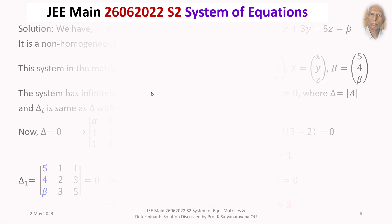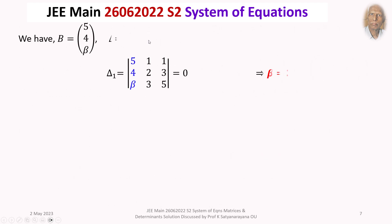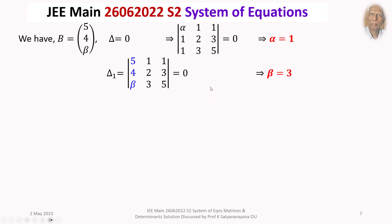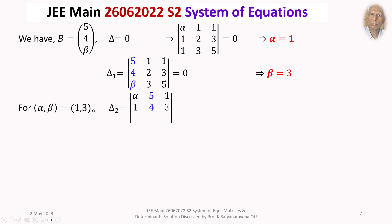Normally students will stop here and take alpha equals 1, beta equals 3 as the answer — and that is correct — but we need to convince ourselves that delta₂ equals 0 and delta₃ is also equal to 0. The system admits infinitely many solutions only when delta equals delta₁ equals delta₂ equals delta₃ equals 0, so we need to verify that requirement.